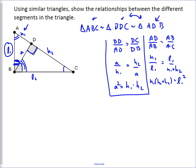You can make a similar argument to prove the same thing over here, where you end up with H2 times H1 plus H2, the entire hypotenuse, equals L2 squared. So now we are armed with three geometric means.